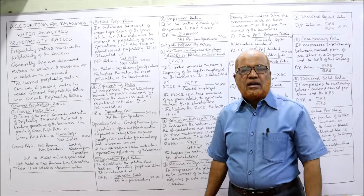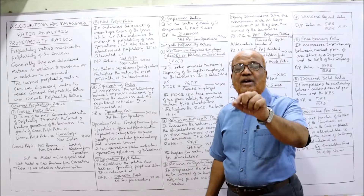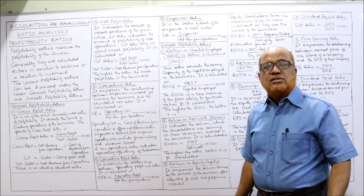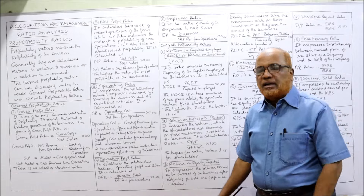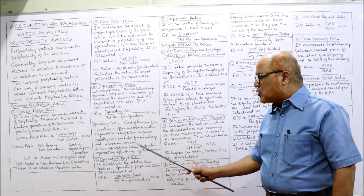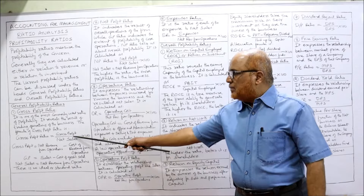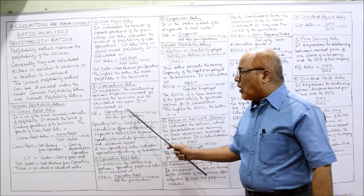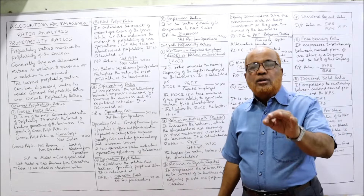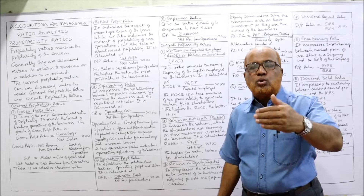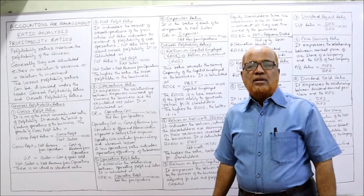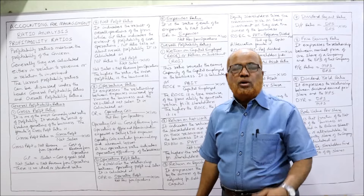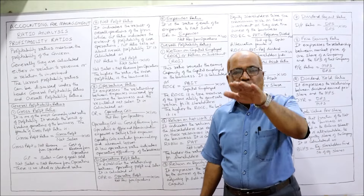A low operating ratio indicates operating efficiency — unlike gross profit ratio and net profit ratio where higher is better, for operating ratio, a lower ratio shows greater efficiency of the business. So businesses should aim to keep the operating ratio at a lower level.